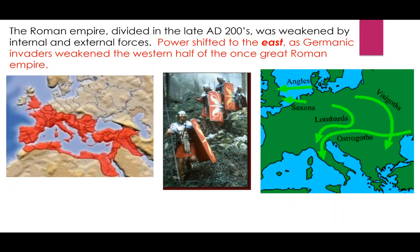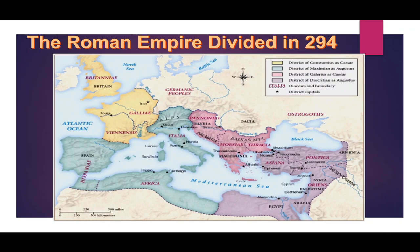Here's the Roman Empire in red. It gets split right down the middle — the west with its headquarters in Rome, the east with its headquarters in Constantinople. Constantinople links the Mediterranean Sea to the Black Sea. In the west, the Visigoths, Ostrogoths, Lombards, Saxons, and Angles came into Rome and eventually defeated the Western Roman Empire in 476 AD.